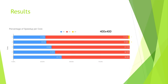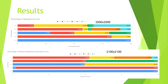Here we see the results of the test with a 400x400 matrix. Most of the results are 1x speedups and 0x speedups, with a very small percentage being 2x speedups. For the 2,000x2,000 and 2,100x2,100 matrices, when using one core, a speedup of 1x is expected. When observing two cores, a speedup of 2x is the majority.